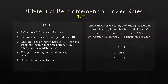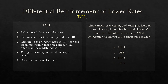DRL — differential reinforcement of lower rates — is very similar to DRD with a couple major differences. We pick a target behavior for decrease, then pick an amount with a time period or an IRT. So you can use the amount with a criterion like DRD, or we can use IRT. If a behavior — say, biting — is happening at 60 bytes per minute, which is one per second, we want to lower that. We'd pick a predetermined IRT, like five seconds, and reinforce if the behavior happens at less than that rate. You can use either approach: amount with criterion or IRT.